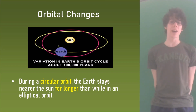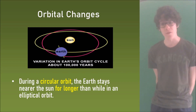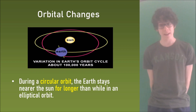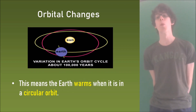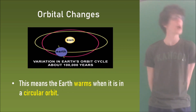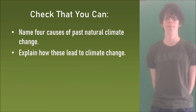During a circular orbit, the earth stays nearer the sun for longer than while in an elliptical orbit. This means the earth warms when it's in a circular orbit compared to when it's in the oval orbit.